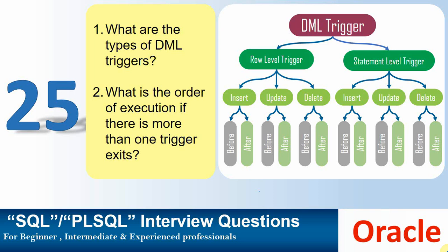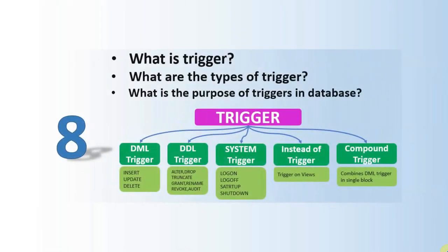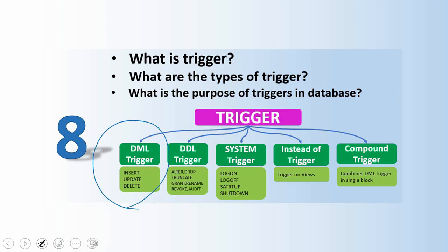Let us try to understand in detail about the types of triggers and the order in which they get executed. We already saw at a high level the different types of triggers — the broad classification: DML trigger, DDL trigger, system trigger, instead-of trigger, and compound trigger. In this video we are going to talk specifically about the subtypes within the DML trigger.